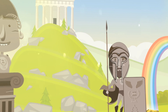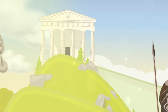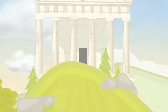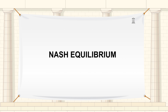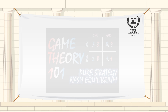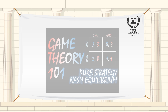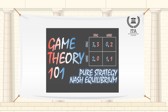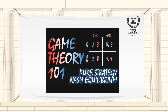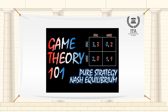Welcome to the Investors Trading Academy talking glossary of financial terms and events. Our word of the day is Nash Equilibrium. Nash Equilibrium is a concept of game theory where the optimal outcome of a game is one where no player has an incentive to deviate from his or her chosen strategy after considering an opponent's choice.